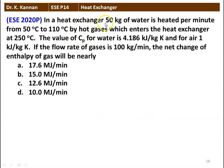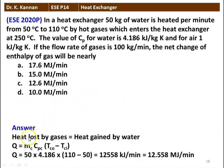The next question: in a heat exchanger, 50 kg of water is heated per minute from 50°C to 110°C by hot gases which enter at 250°C. Specific heat of water = 4.186 kJ/kg·K and for air = 1 kJ/kg·K. Flow rate of gas = 100 kg/min. The net change of enthalpy of the gas will be 17.6, 15, 12.6, or 10 MJ/min. Heat loss by gases = heat gain by water: Q = MC × CPC × (TCO − TCI) = 50 × 4.186 × (110 − 50) = 12,558 kJ/min = 12.558 MJ/min. The answer is 12.6 MJ/min.